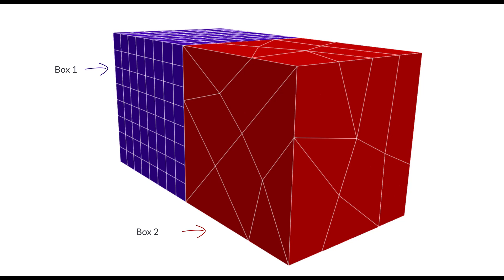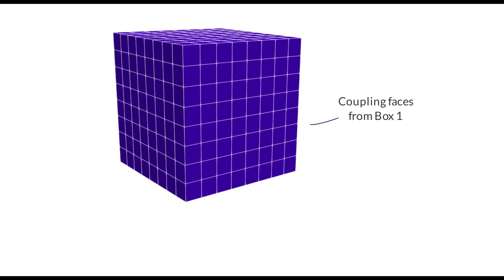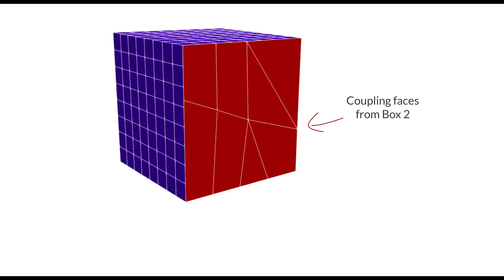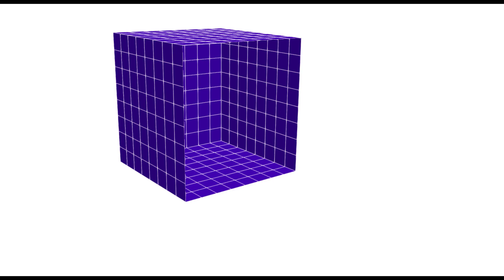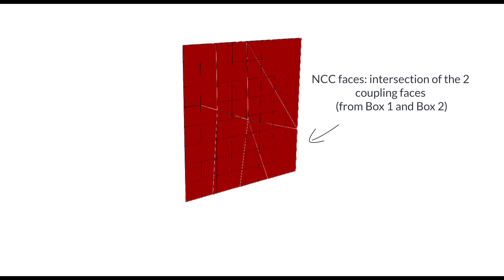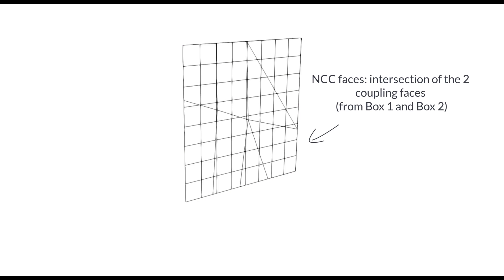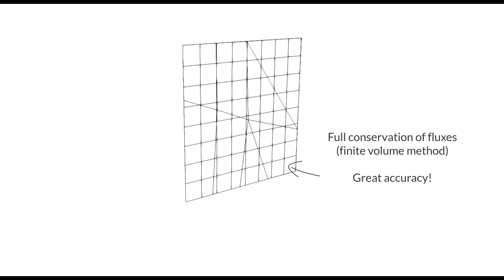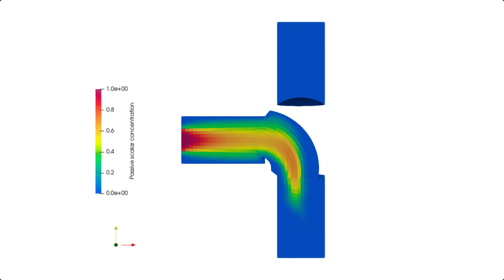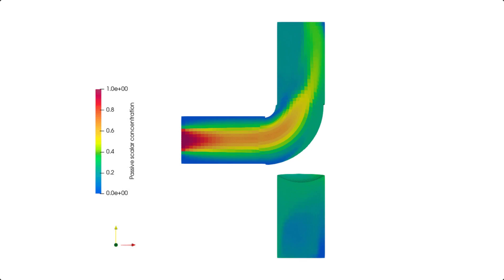In terms of case setup, we implemented a few new boundary conditions. The first is Non-Conformal Coupling (NCC), a new methodology for coupling patches with advantages over the AMI coupling approach. The NCC approach creates virtual faces between the boundary patches to be coupled, which result from the intersection of each boundary patch's faces, so the new faces are identical on both sides, resulting in a perfect one-to-one match when calculating fluxes and other finite volume variables. Full conservation and great accuracy are maintained, which is a known issue with the arbitrary mesh interface approach. In this version, NCC has been implemented for static boundaries only.